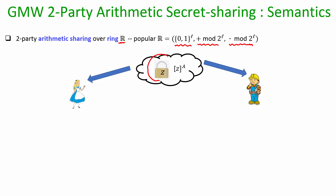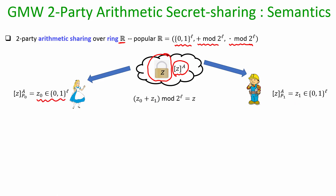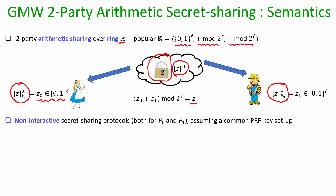In terms of the lock representation, I will use a new lock to represent an L-bit number secret shared between Alice and Bob. The mathematical notation uses superscript A to denote that L-bit number Z is arithmetically secret shared, where Alice's and Bob's shares are two L-bit numbers that sum modulo 2^L to give Z. Assuming a PRF key setup, the secret sharing protocols in the GMW arithmetic world can be made non-interactive.